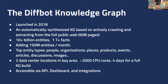We currently have over 10 billion entities, a trillion triples or facts, and we're adding about 150 million new entities per month as we crawl the web. The top entity types in our knowledge graph include people, organizations, places, products, events, articles, discussions, and images. We're adding things like job posts and eventually medical and real estate entities. We crawl from our facility in the Bay Area, California — currently about 2,000 CPU cores — and it takes about four days for the entire cluster to build the knowledge graph.